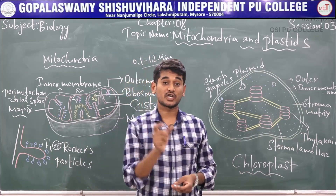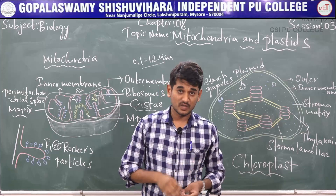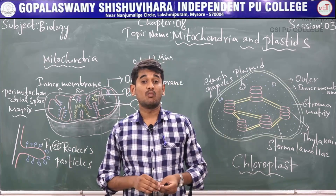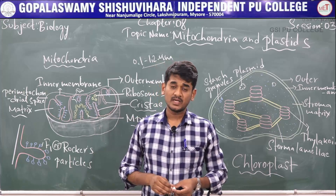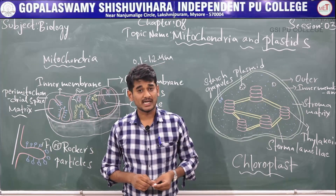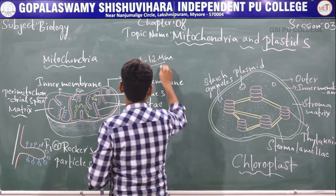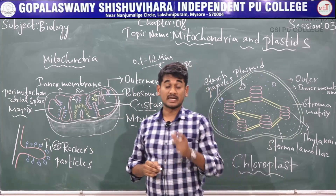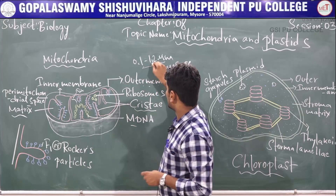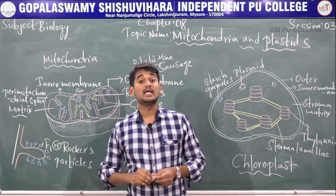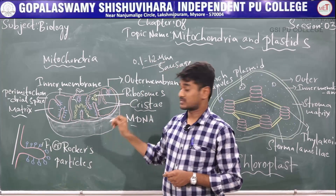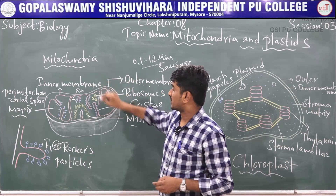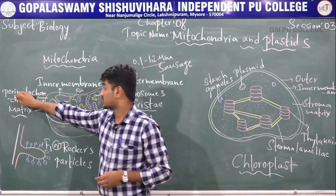The size and shape of mitochondria are also variable. Compared to plant cells, animal cells have more mitochondria. Typically, the mitochondria are sausage-shaped or cylindrical. The diameter of mitochondria is 0.1 to 1.2 micrometers. It is a double membrane-bound organelle with an outer membrane and an inner membrane. The space between the outer membrane and inner membrane is called the perimitochondrial space.